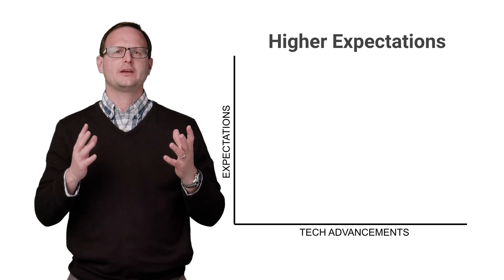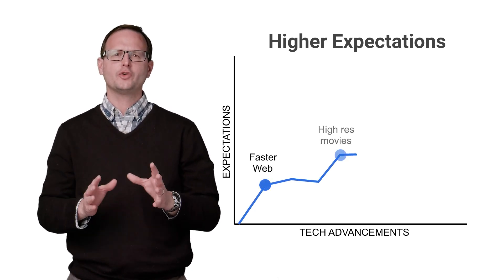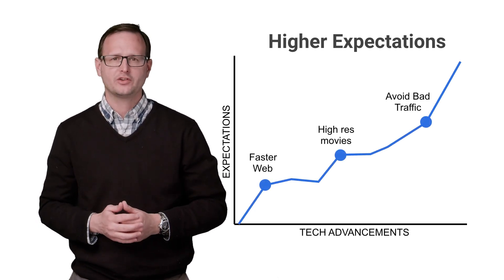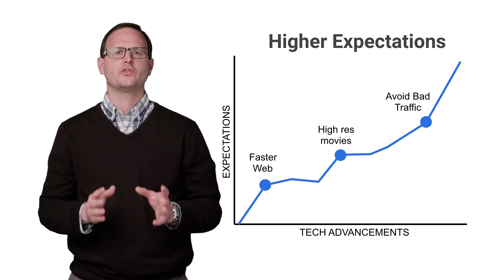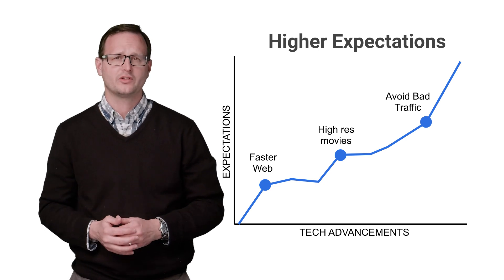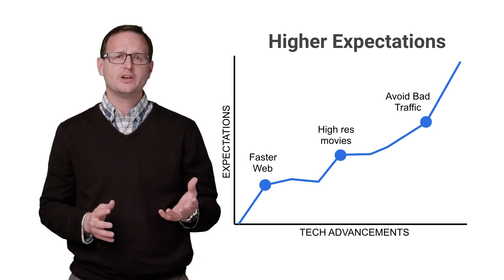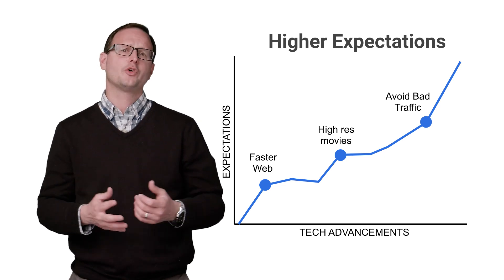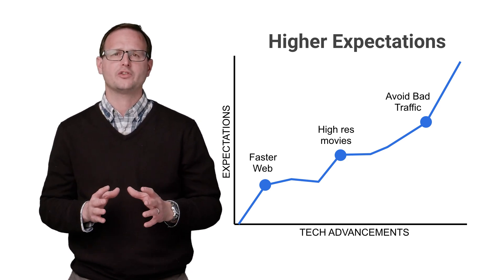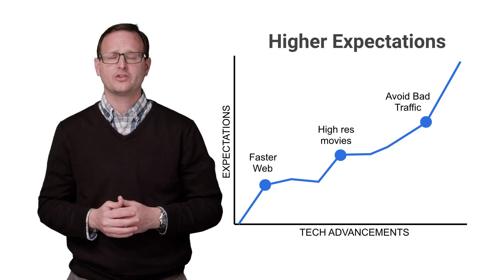In order to understand how to take best advantage of these features, let's focus on user habits and expectations. Constant technology advancements have led to user expectations of continuous improvements in speed and convenience. We expect our web pages to load faster, our movies to be high resolution, our deliveries to arrive within minutes, and our phones to not only tell us how to reach a destination, but also to navigate around accidents or bad traffic.